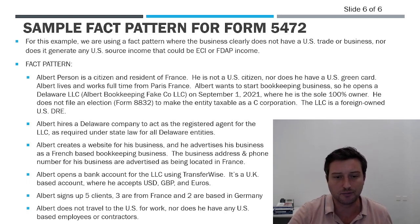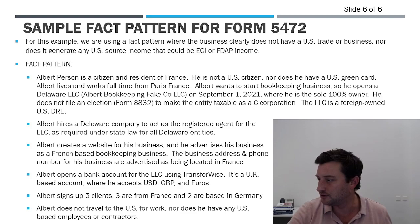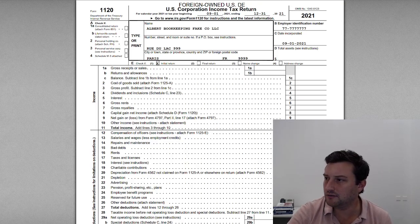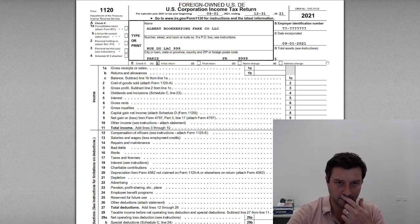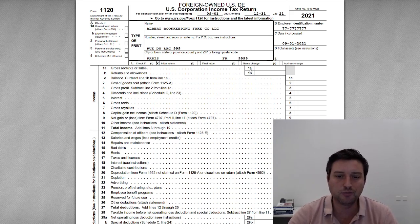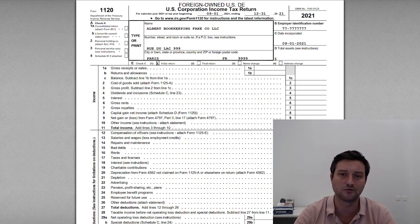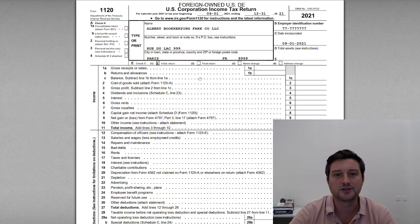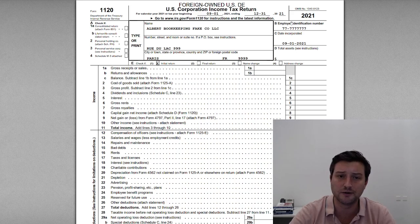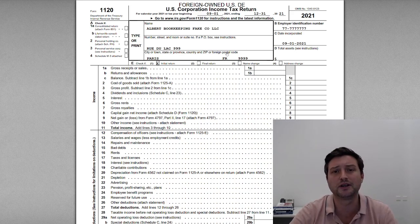So now let's pull up the sample 5472. Here is the sample 5472 for Albert's fake bookkeeping LLC. The Form 1120 basically acts like a cover page. Form 5472 is where you're entering most of the information, and then the 1120 acts as a cover sheet that has some information so when it's sent to the IRS, they know what kind of entity it is and how to key it into the system. At the top here we have the name of the LLC, the EIN, date the entity was formed, and the mailing address for the company.